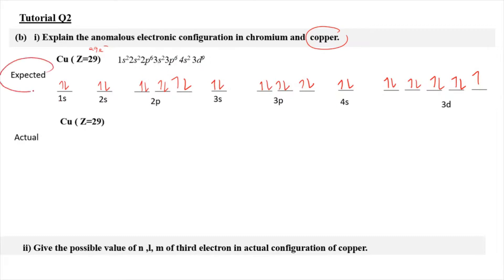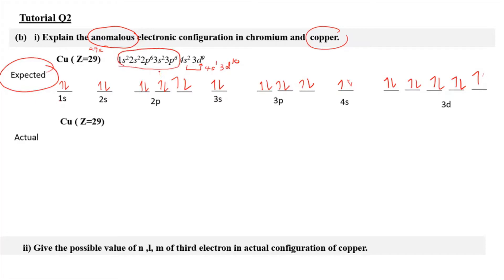This is what we expect, but because of the anomalous case, one of the electrons from 4s is transferred to 3d9. As a result, it forms an SPDF notation of 4s1 and 3d10, which is much more stable. The unaffected part stays the same. So for the actual configuration, we write 4s1 and 3d10.